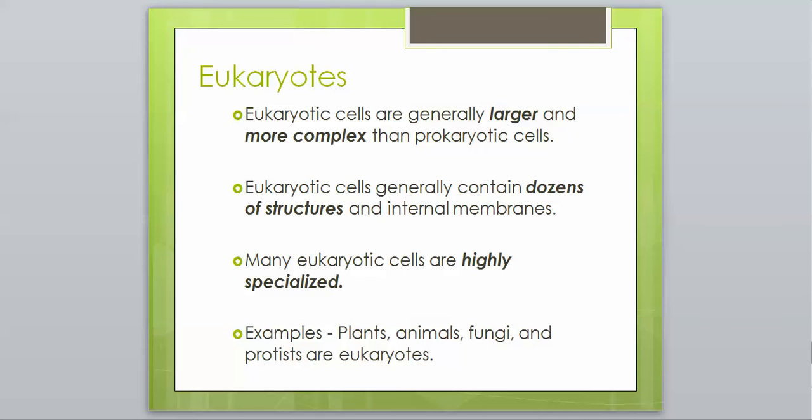Going against everything that the prokaryotes have, here are the characteristics of the eukaryotes. Eukaryotic cells are generally larger and more complex than prokaryotic cells. Eukaryotic cells generally contain dozens of structures and internal membranes.